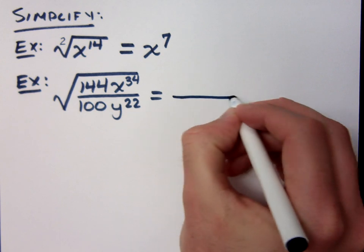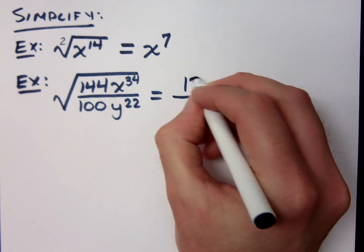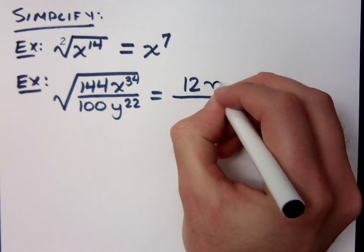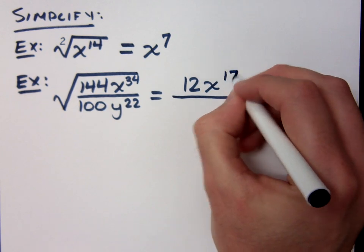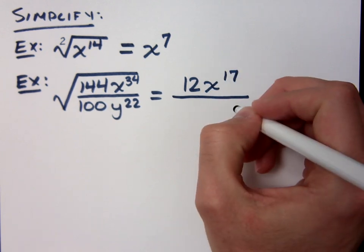Right, so in that numerator, the square root of 144 is just 12. The square root of x to the 34th is x to the what? 17th. You just cut that by the index, which is 2.